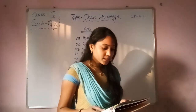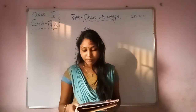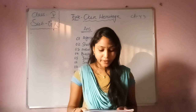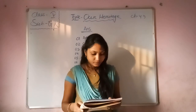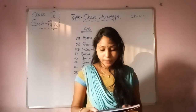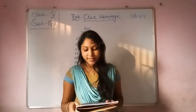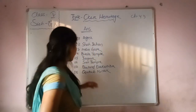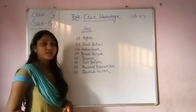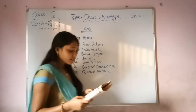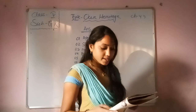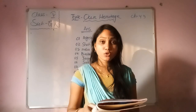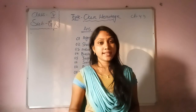Question number 6: Name the monument which was built by King Narasimhadeva. It is in the shape of a chariot with 24 wheels and drawn by 7 horses. That monument is the Konark Sun Temple.